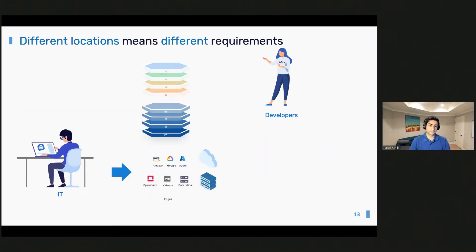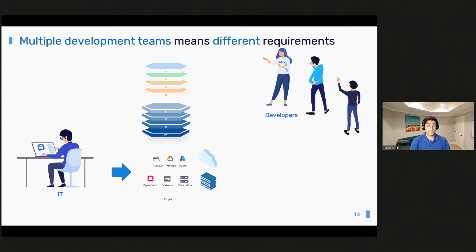So where does this complexity come from? The first dimension is the different locations or environments where Kubernetes can be deployed — the underlying infrastructure can be a public cloud, private cloud, data center, bare metal, and even edge. We're seeing lots of interesting use cases with Kubernetes at edge now. The second angle is around multiple development teams. Large organizations don't just have a single development team; they have multiple, with different diverse projects and different needs, each with different requirements for what their entire Kubernetes stack should look like.